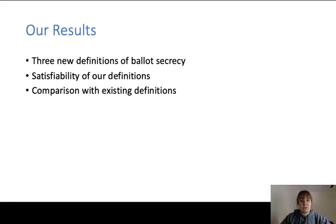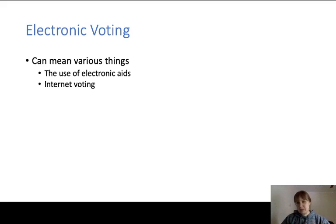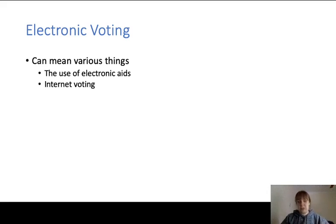In this talk I'll give an overview of these results, but first let's define some terminology. Electronic voting, or e-voting as it's more commonly known, can mean different things depending on the context. It may mean simply that electronic aids are used at some point during the election — for example, machines to scan ballots and automate tallying, or machines used by voters to cast a ballot. But sometimes e-voting refers specifically to internet voting, where voters can, at least in theory, vote from anywhere in the world. Internet voting is the context of this talk.